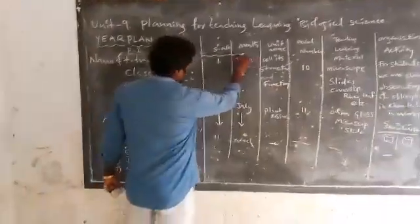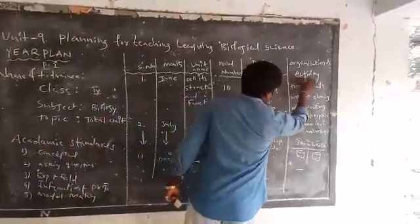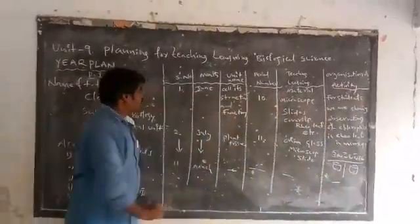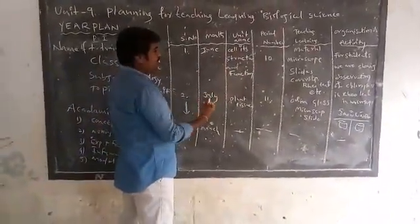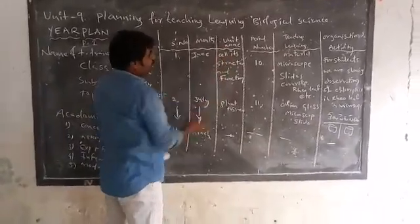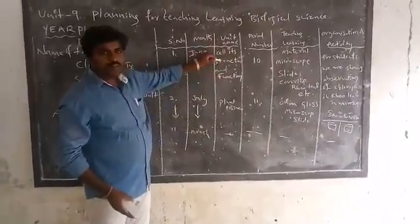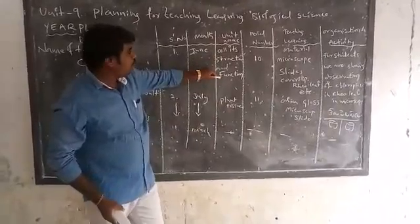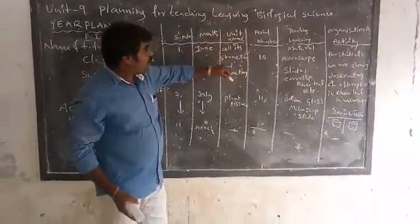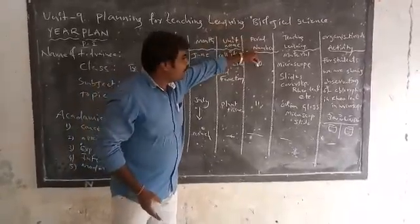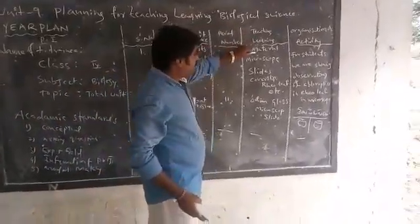For example, an entry in the year plan would look like this: Serial Number — 1; Month — June, when we start the academic year; Unit Name — Cell Structure and Function; Period Number — for example, 10 periods. Next, Teaching Learning Material is noted for that unit.